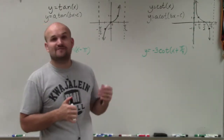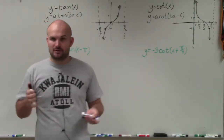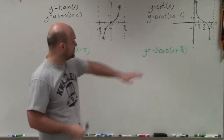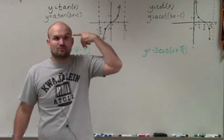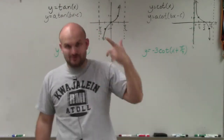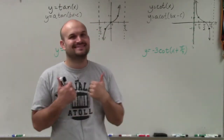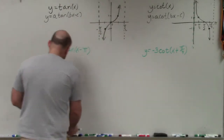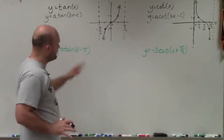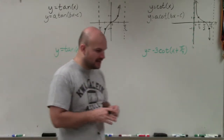The a value is going to affect the shape of the graph. And you can notice we have a negative, so automatically you should be thinking reflection. OK, so let's just get onto a basic example of tangent.